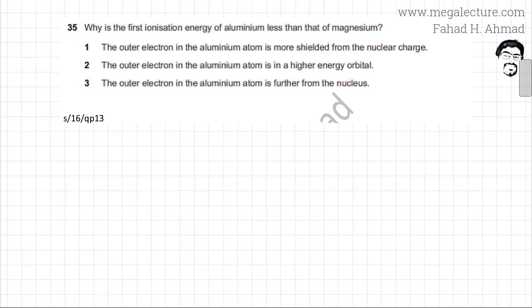The following question reads: why is the first ionization energy of aluminum less than that of magnesium? We need to figure out why this atom over here has a lower first ionization energy.